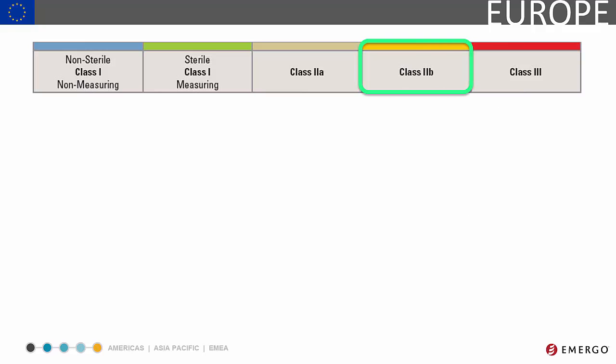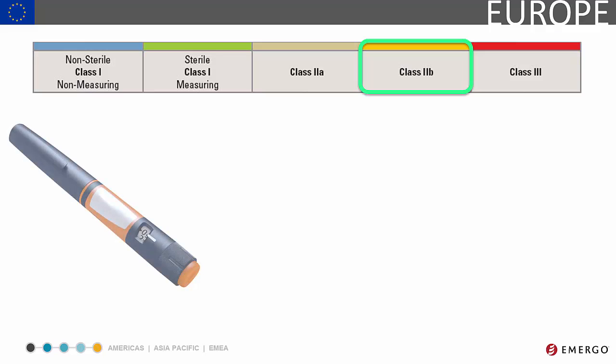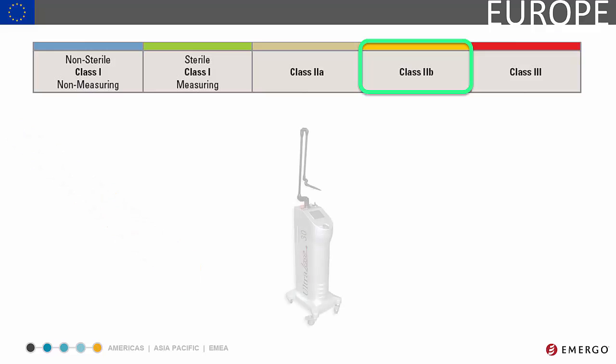Class 2B devices represent an even higher amount of risk. Examples include insulin pens, laser scalpels, and dialysis machines.